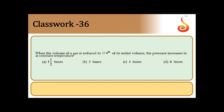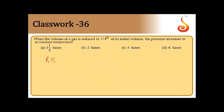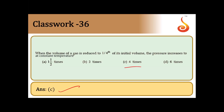Question 36: When the volume of a gas is reduced to one-fourth at constant temperature, the pressure increases to how much? Applying Boyle's law: P1V1 = P2V2, so P × V = P2 × (V/4), giving P2 = 4P. Pressure becomes four times the initial pressure. Answer is option C.